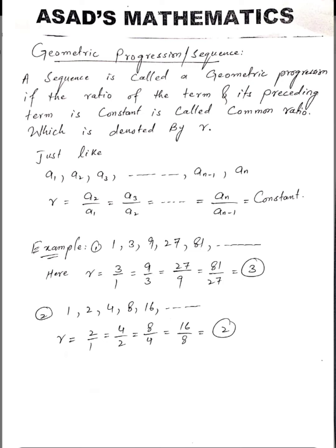Let's first define geometric progression. A sequence is called a geometric progression if the ratio of a term to its preceding term is constant, which is called the common ratio.